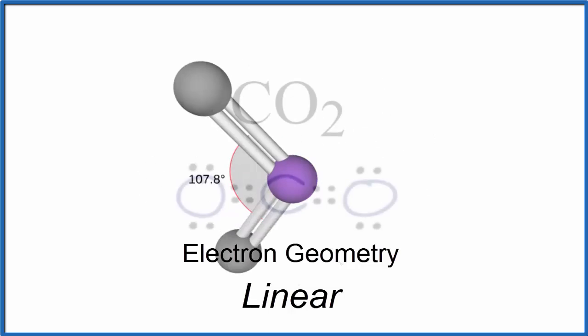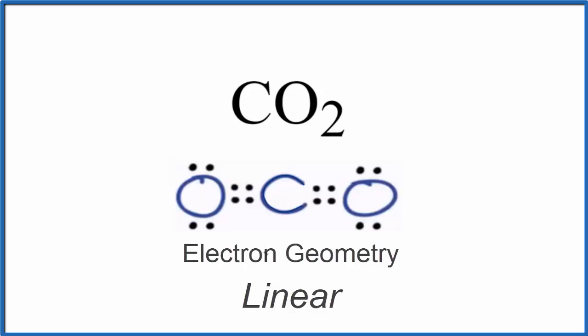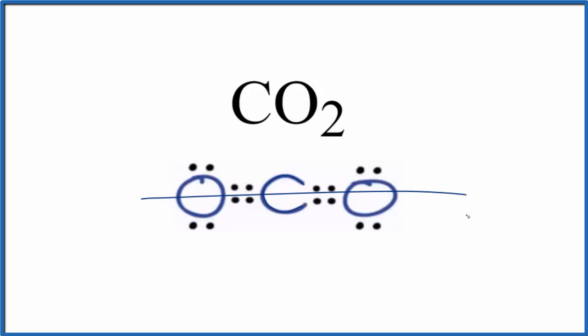Back to our Lewis structure. So to recap, the electron geometry and the molecular geometry for CO2 carbon dioxide, that's linear. And that bond angle, 180 degrees.